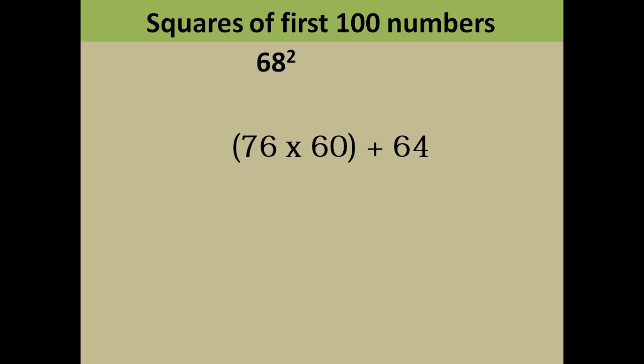Now if you multiply 76 with 60, basically what you have to do is multiply 76 by 6 and then add 0 at the end. So 76 into 6 is 4560. You will add 64 to it, you will get 4624.